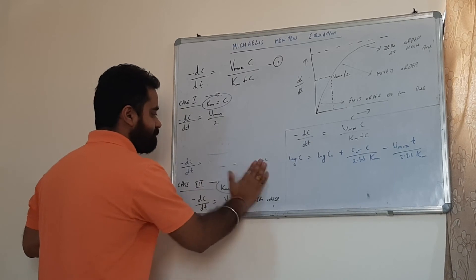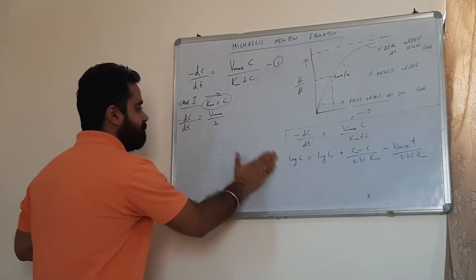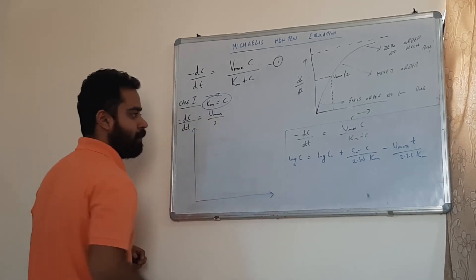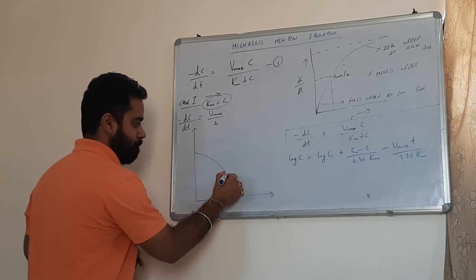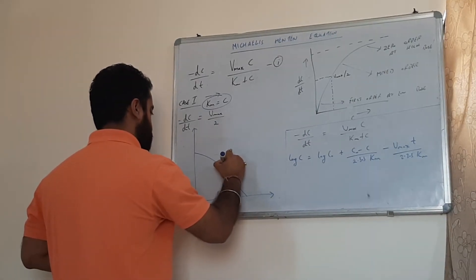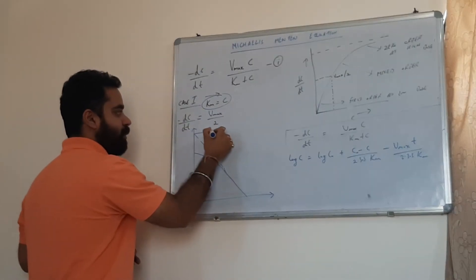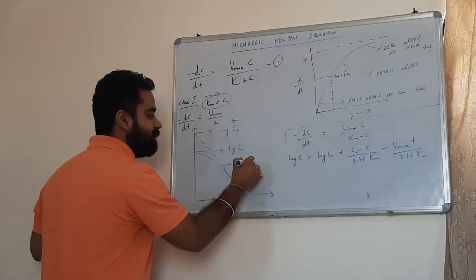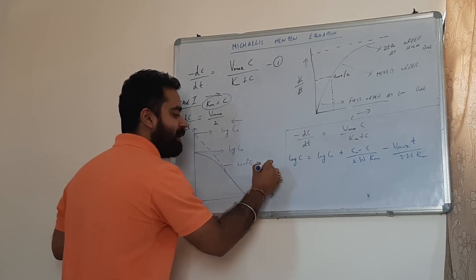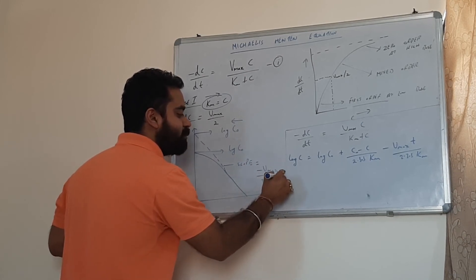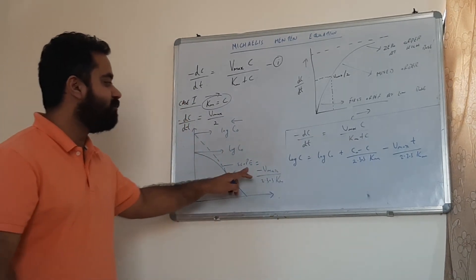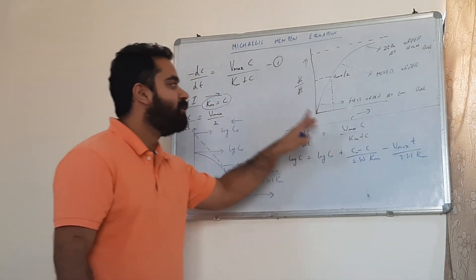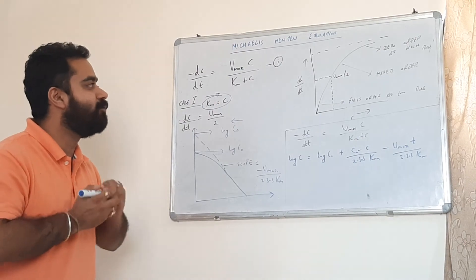If we plot a graph using the back-extrapolated values, the y-intercept represents log c₀ (back-extrapolated), and the slope of this line equals minus Vmax divided by (2.303·Km). From this slope, we can obtain the values of both Vmax and Km. This is the method to estimate the values of Vmax and Km using the Michaelis-Menten equation, its integration, and conversion into log form.